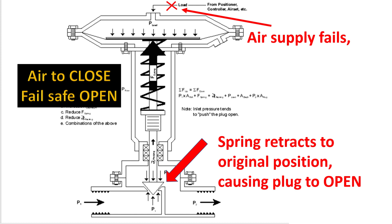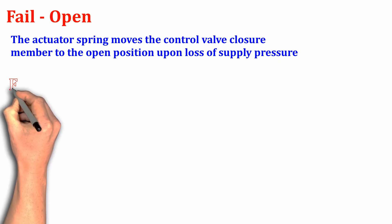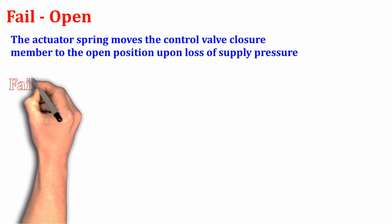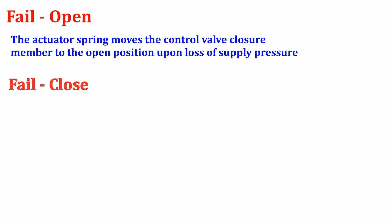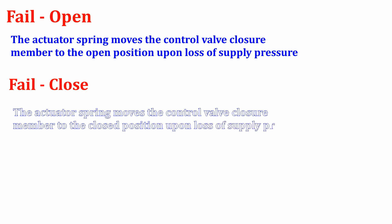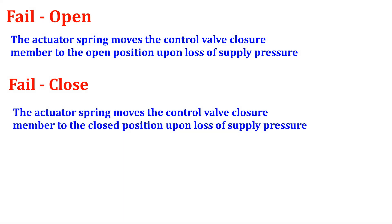When air fails, the spring automatically retracts to its original position, causing the plug to open. This is how your failsafe open actuator works. Next is the failsafe close condition — in this mode, the actuator spring moves the valve closure member to the closed position upon loss of supply air, which is basically the vice versa of failsafe open mode.